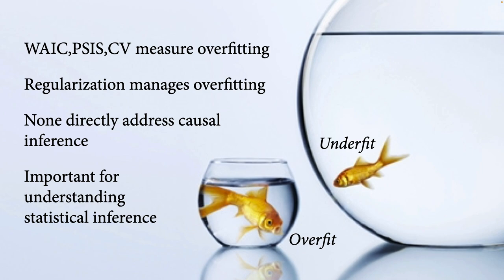Tools like WAIC, PSIS, and cross-validation measure overfitting — they estimate out-of-sample performance. They don't do anything about it. Regularization manages it. Neither of these tools directly addresses causal inference. What you should never do is choose a structural model and causal estimate by comparing WAIC, PSIS, or cross-validation scores. These are predictive metrics about prediction in the absence of intervention. Causal inference is about prediction in the presence of intervention — those require different tools.